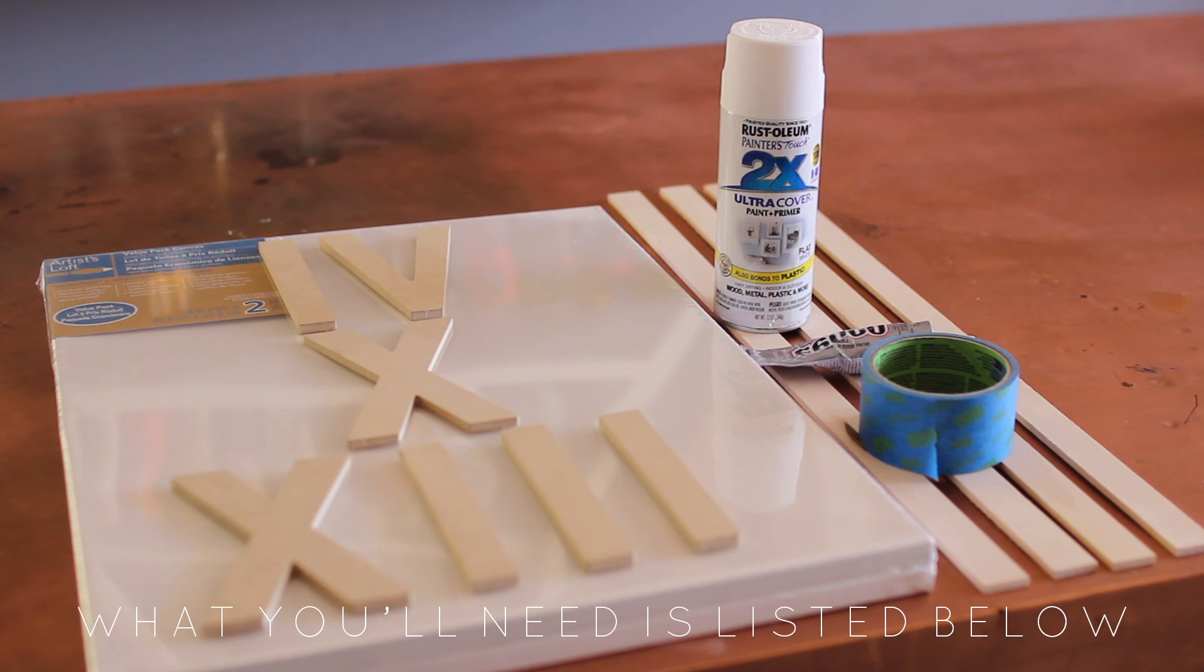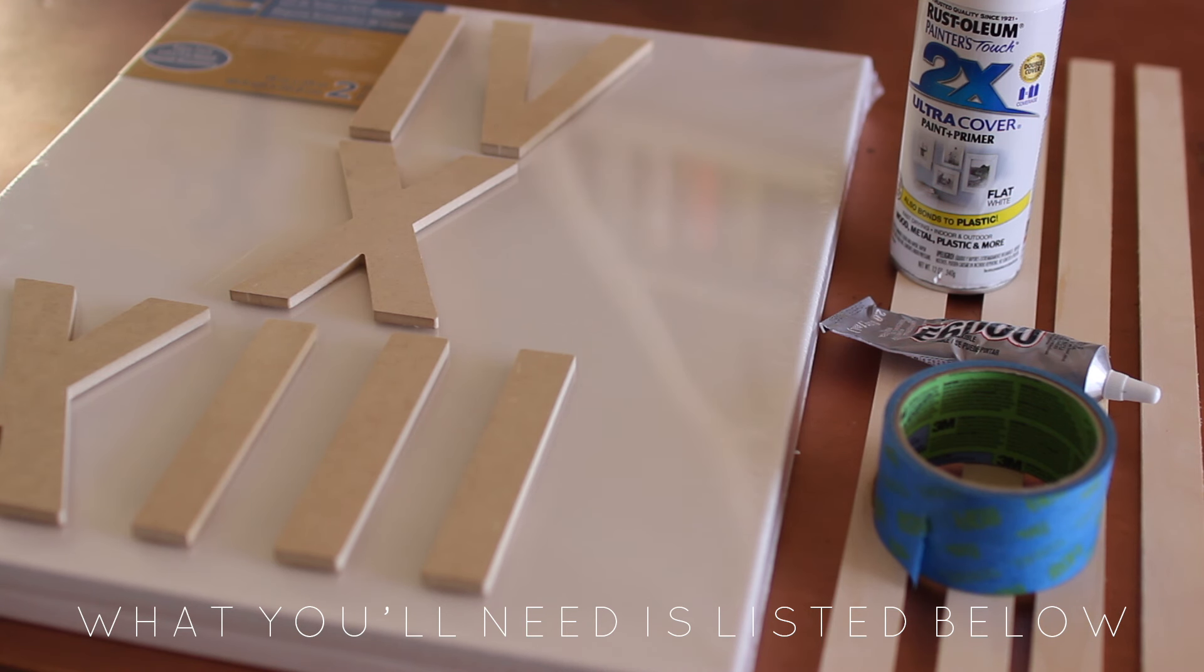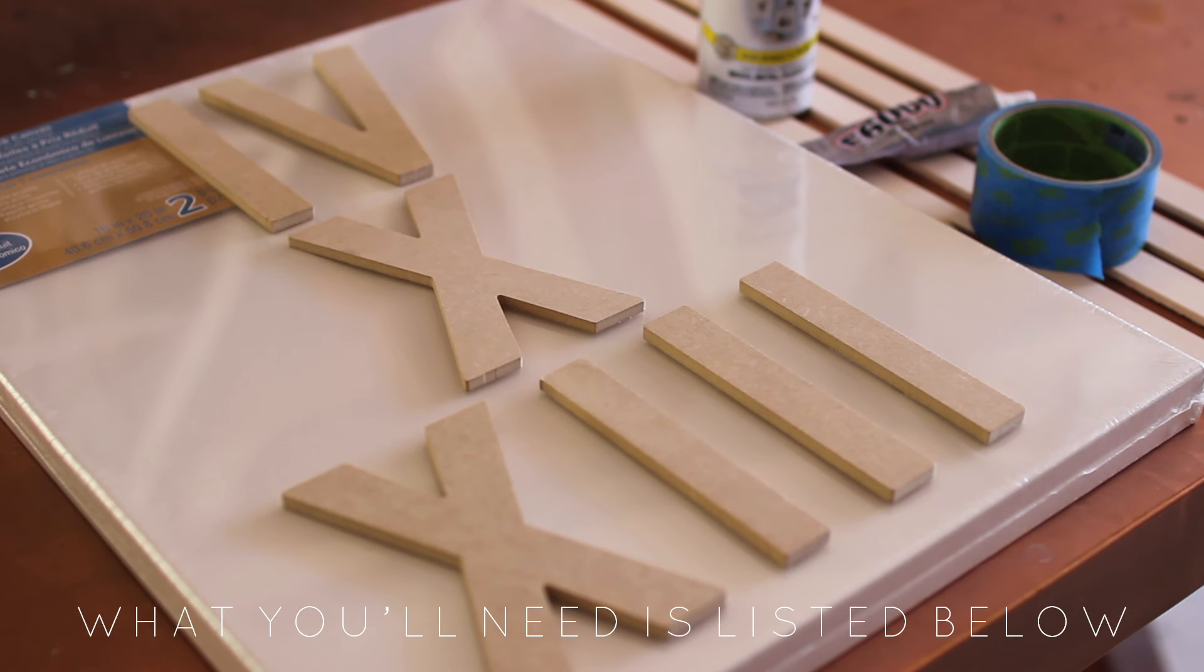For this you're going to need a canvas size of your choice and then the letters to match that canvas. Some spray paint, E6000, and four side wooden pieces to make a DIY frame if you want to. No tape, we're actually going to use hot glue.